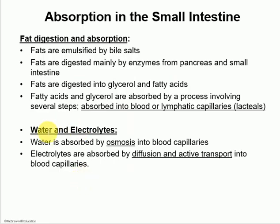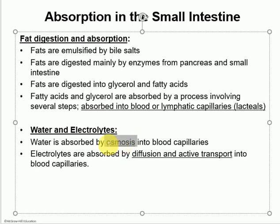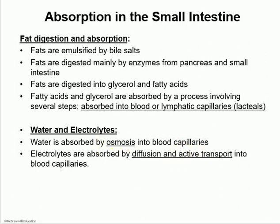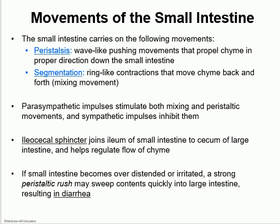For water and electrolyte absorption: water doesn't need to be digested, but it is going to just follow electrolytes by osmosis. Water also follows the absorption of anything — the absorption of sugars, amino acids, and especially sugars and electrolytes, which pull in water by osmosis into the blood capillaries. Electrolytes are absorbed by diffusion and active transport, also absorbed into the blood capillary. So everything is absorbed into the blood system, except for fat, which is absorbed mainly through the lacteals first, and then reaches the circulatory system.